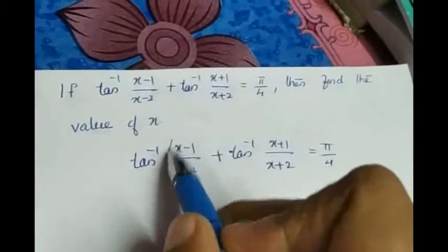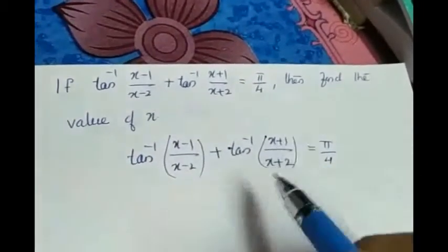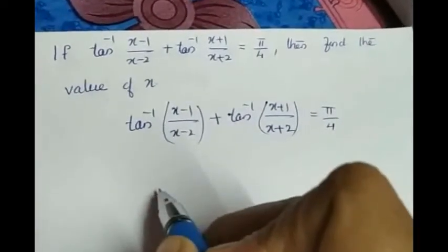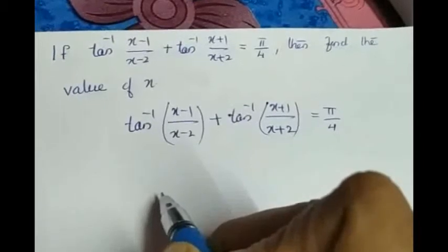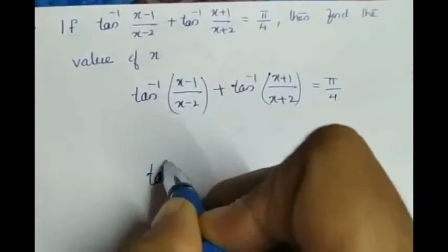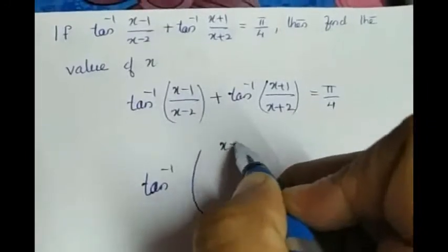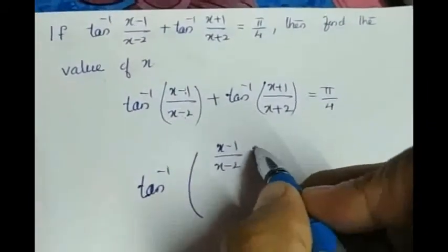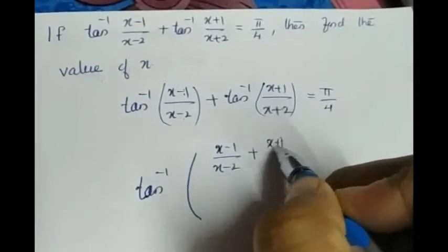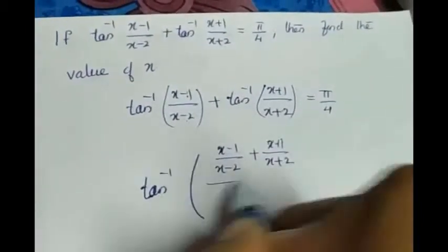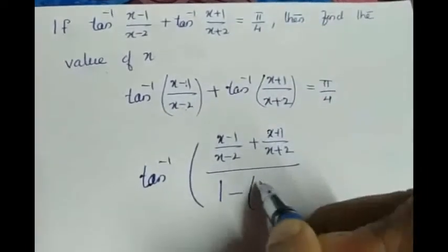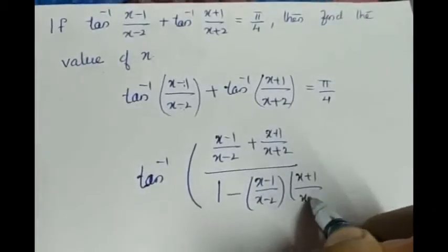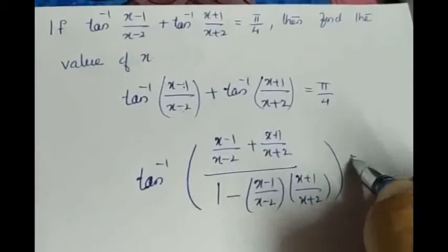We set this up in the form tan inverse x plus tan inverse y. The formula is: tan inverse x plus tan inverse y equals tan inverse of (x plus y) divided by (1 minus xy). So we write tan inverse of [(x minus 1)/(x minus 2) plus (x plus 1)/(x plus 2)] divided by [1 minus (x minus 1)/(x minus 2) times (x plus 1)/(x plus 2)] equals pi by 4.